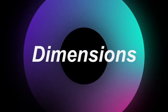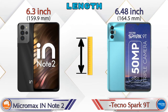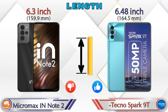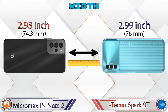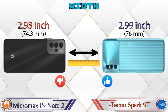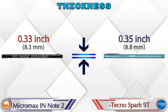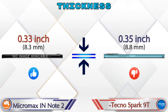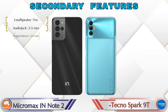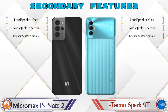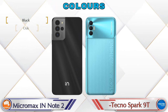Now let's check the details about dimensions. The length of IN Note 2 is 6.3 inches and Spark 90 is 6.48 inches. Width is 2.93 inches on IN Note 2 and 2.99 inches on Spark 90. Thickness is 0.33 inches on IN Note 2 and 0.35 inches on Spark 90, making the Spark 90 slightly thicker.